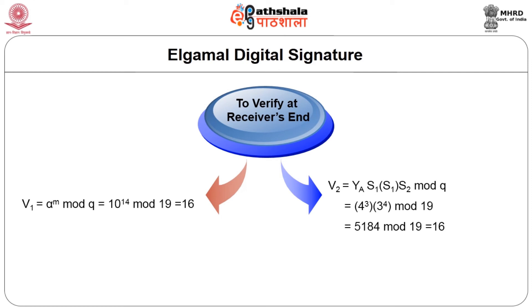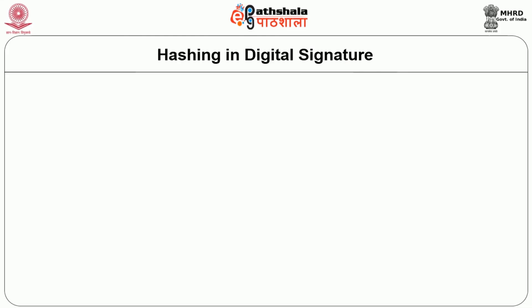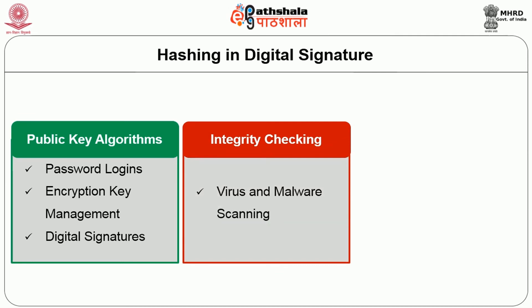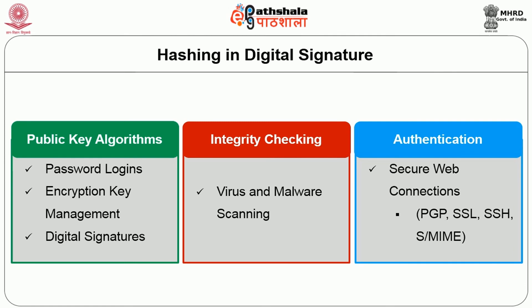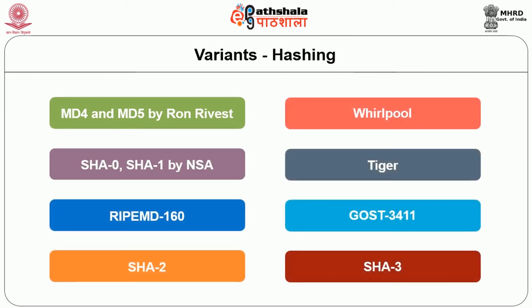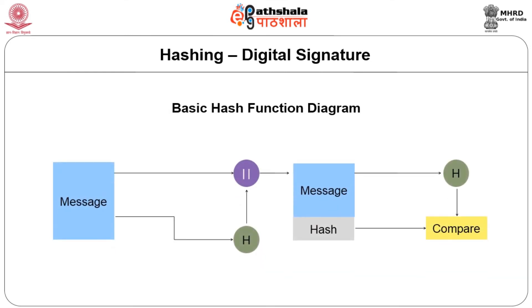Hashing in digital signature uses one-way hash functions. We can use public key algorithms for password login, encryption key management, and digital signatures. We can also do integrity checking, virus and malware scanning, and authentication for secure web connections. PGP, SSL, SSH, and S/MIME all use hashing in digital signatures for authentication. Variants of hashing algorithms available include MD4 and MD5 by Ron Rivest, SHA-0 and SHA-1 by NSA, RIPEMD-160, SHA-2, Whirlpool, Tiger, GOST-3411, and SHA-3.